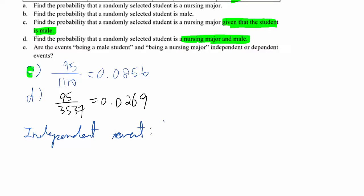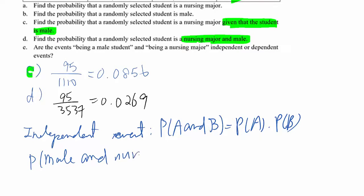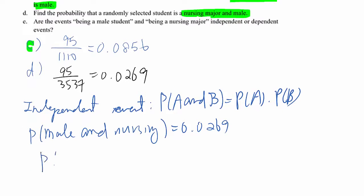Which is probability A and B equals probability A times probability B. We know that. Since probability male and nursing is 0.0269, then now you need to find out probability male first.